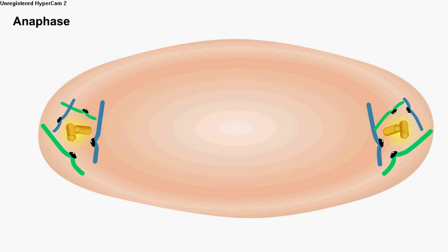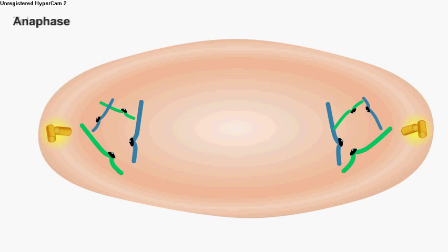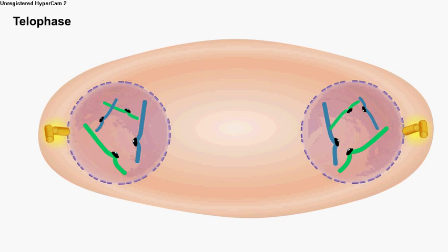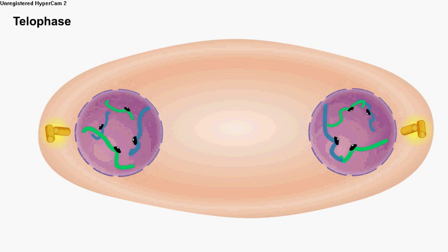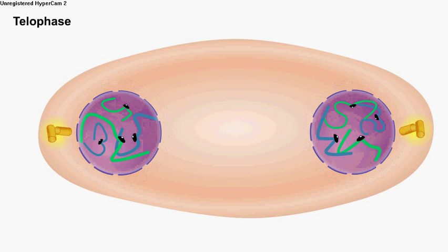The spindle disintegrates. A nuclear envelope starts to form around each set of chromosomes as they return to their original, uncondensed state. These events mark the final phase of mitosis, called telophase.